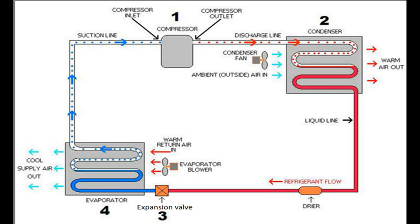The same cycle repeats continuously. To summarize: the low temperature, low pressure refrigerant enters the compressor and becomes a high temperature, high pressure gas after compression, then enters the condenser where it exchanges heat with cooling water. The high pressure liquid refrigerant is then throttled through the expansion valve, enters the evaporator where it evaporates using latent heat to reduce chilled water temperature and achieve cooling, then the refrigerant gas returns to the compressor to begin the next cycle.